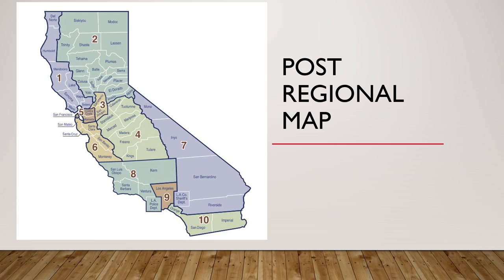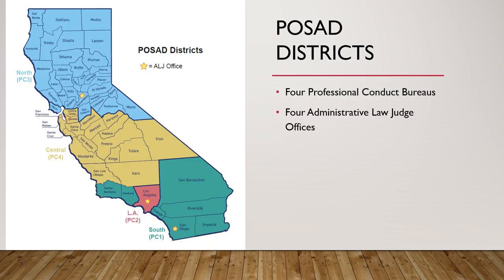This is the Post Regional Map, where the state is broken into 10 regions. Regional consultants are assigned to an area and work with all the agencies in their respective areas to handle all matters involving Post. We're going to adopt and use that same concept for SB2, where law enforcement consultants are assigned to an area to work with all the agencies in their area.